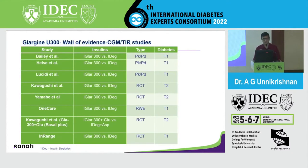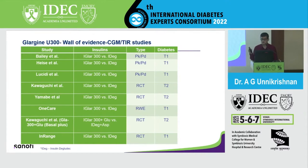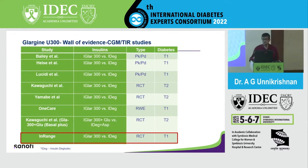This presentation is on generation 2 basal insulin, and these are all the studies which look at the generation 2 basal insulins — Glargine U300 versus Degludec. Some of them are PKPD studies, some are real-world studies, and a few are randomized controlled trials. I've seen data comparing Glargine U300 and Degludec many times, and most data show that these two insulins are pretty similar. But this particular study I'm going to show you looks at time in range as an outcome between these two.